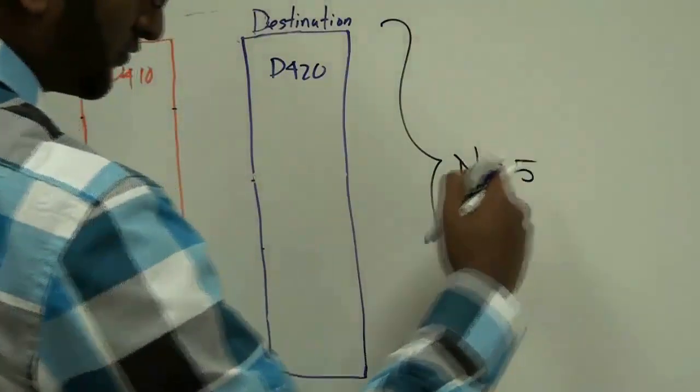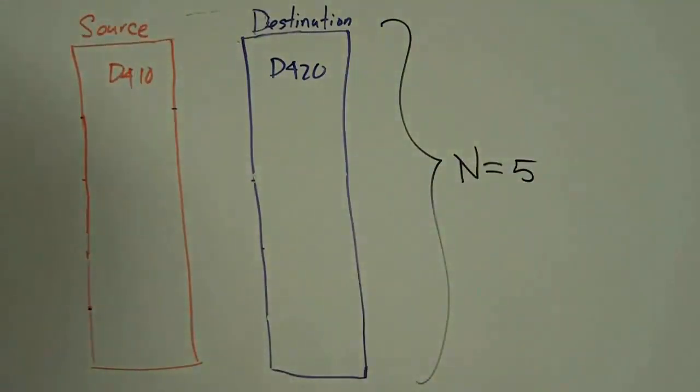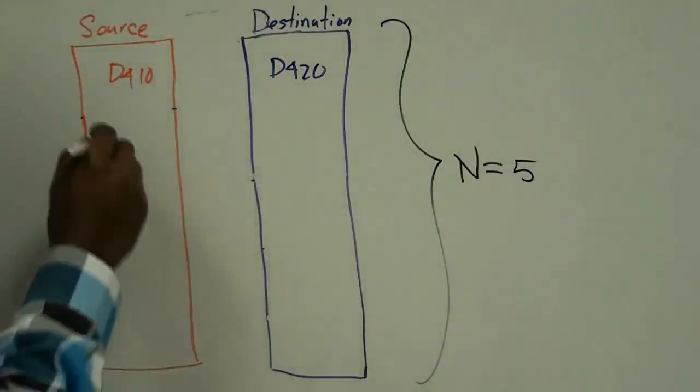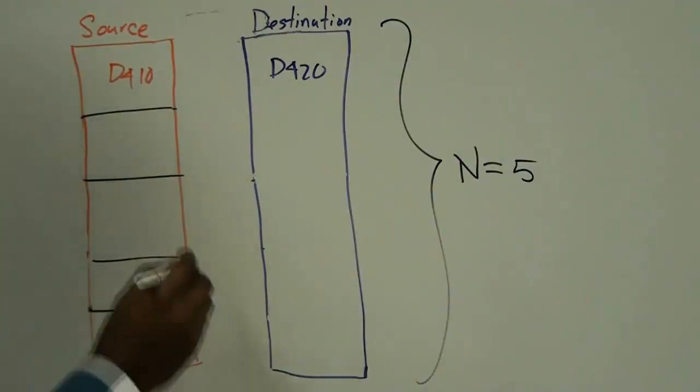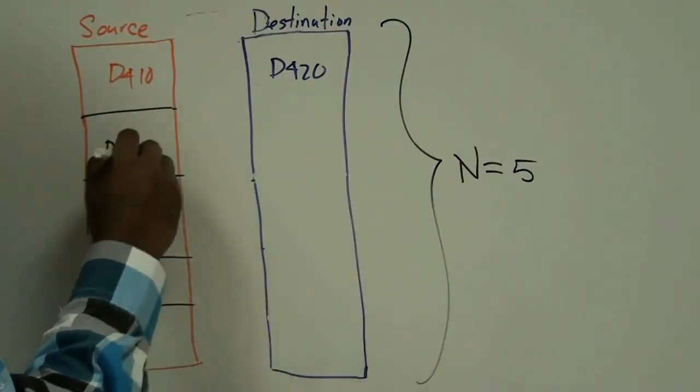And if that is true, then for the left column, we have table D410, D411, D412, D413, and D414.